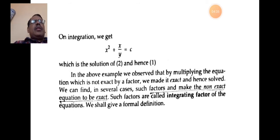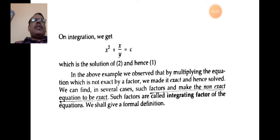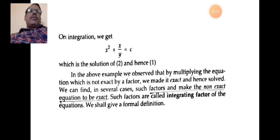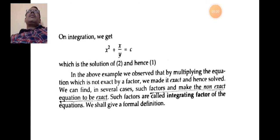In the above example, we observed that by multiplying the equation — which is not exact — by a factor, we made it exact. The given equation is not exact, but by multiplying by some term or factor, the equation becomes exact. We can find in several cases such factors. Such terms or factors are called integrating factors of the equation.